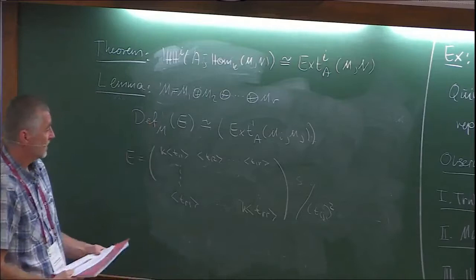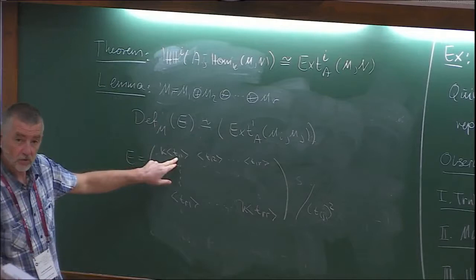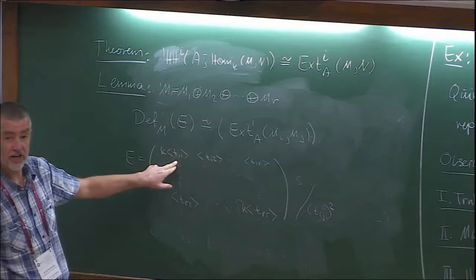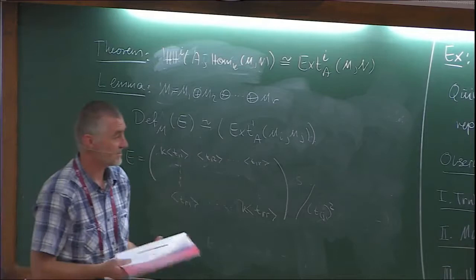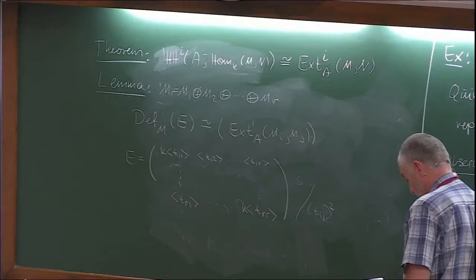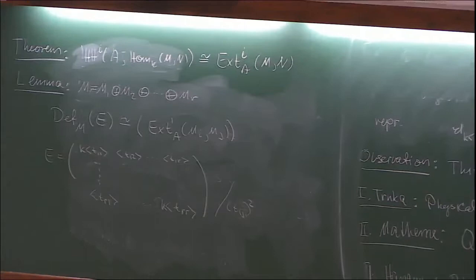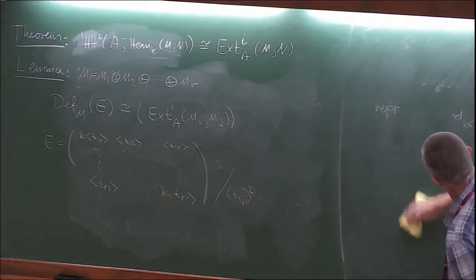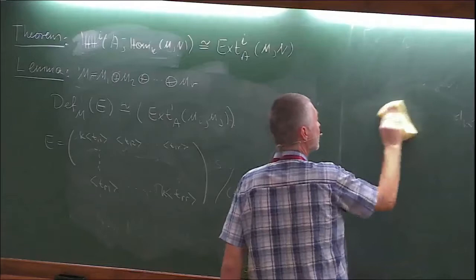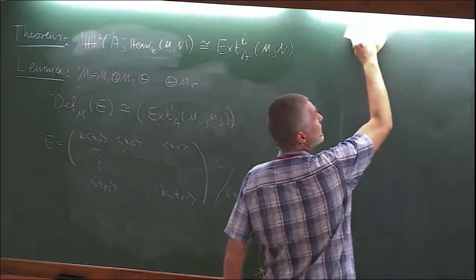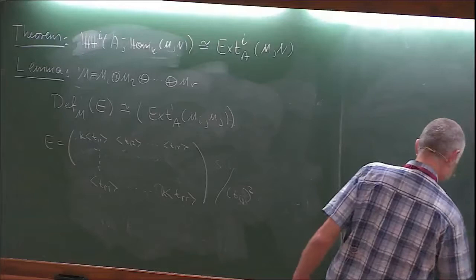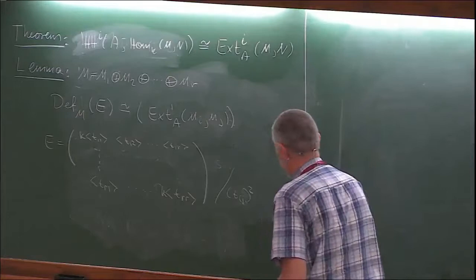Recall that E is the ring with T_{ij} entries: T_{11} through T_{1r}, down to T_{r1} through T_{rr}, divided by the square of the radical — all these T_{ij} squared — so with K here. Then there is just one of these at each point because I am just looking at the tangent space, and each element in Ext gives one tangent coordinate. That's the reason for thinking of the coordinates as tangents.